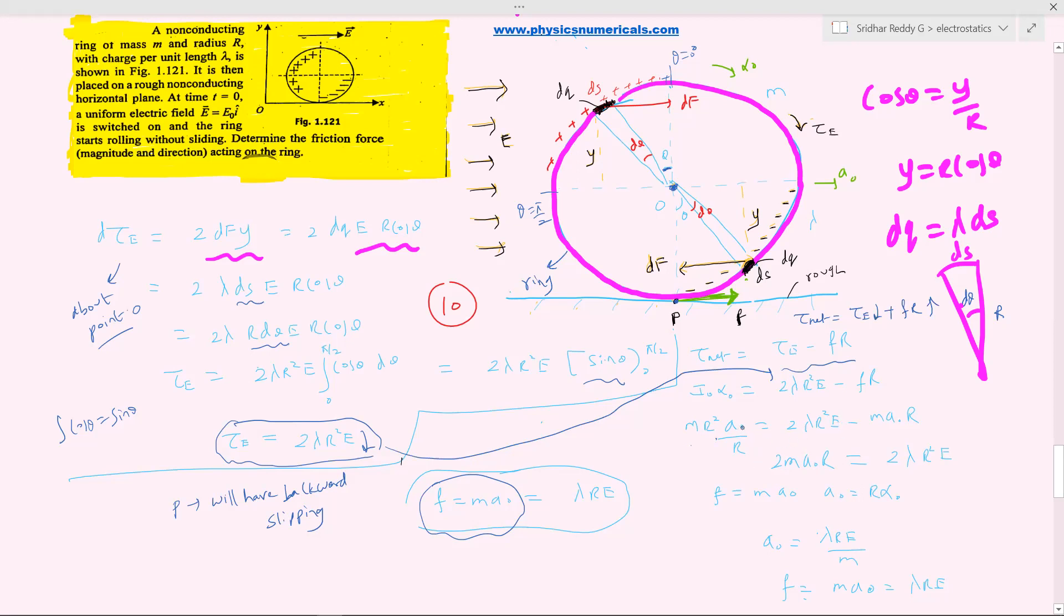Then solving this, we'll get expression for acceleration of center of the ring, which is equal to 2 ma naught R equal to lambda R square E. R gets cancelled. So, a naught is equal to how much? R E by a naught equal to R alpha that I substituted. A naught is equal to how much will be lambda R E by M. Then we know what is F. Who will accelerate the center of mass? The friction. So F should be equal to ma naught. So, a naught is equal to how much? Lambda R E by M. So, this will be the magnitude of friction force. So, this will be our answer.